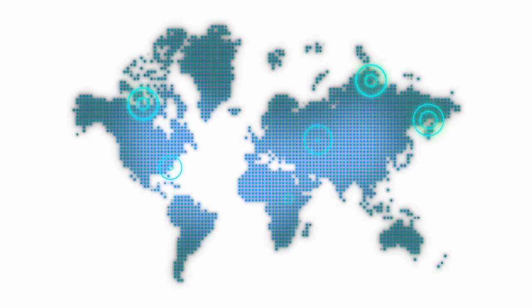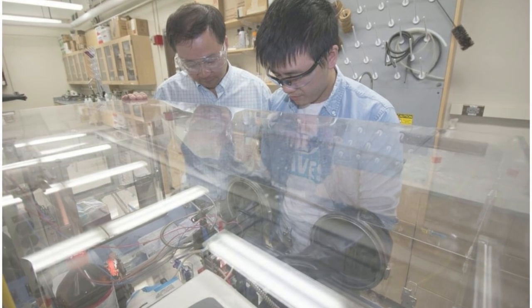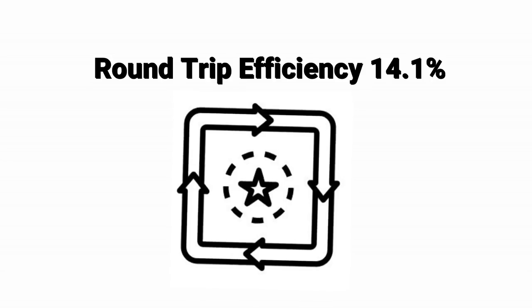There's a lot of research going around the world on solar flow batteries. Some of the more interested countries include the US, China, and even Saudi Arabia. So far, a round-trip efficiency of 14.1 percent has been reached.